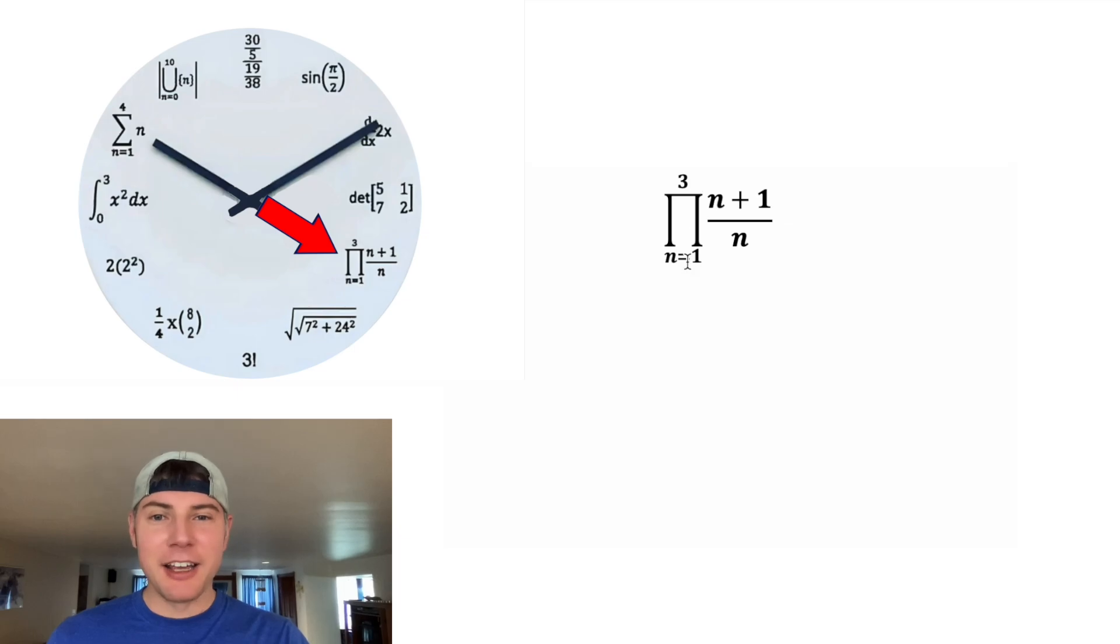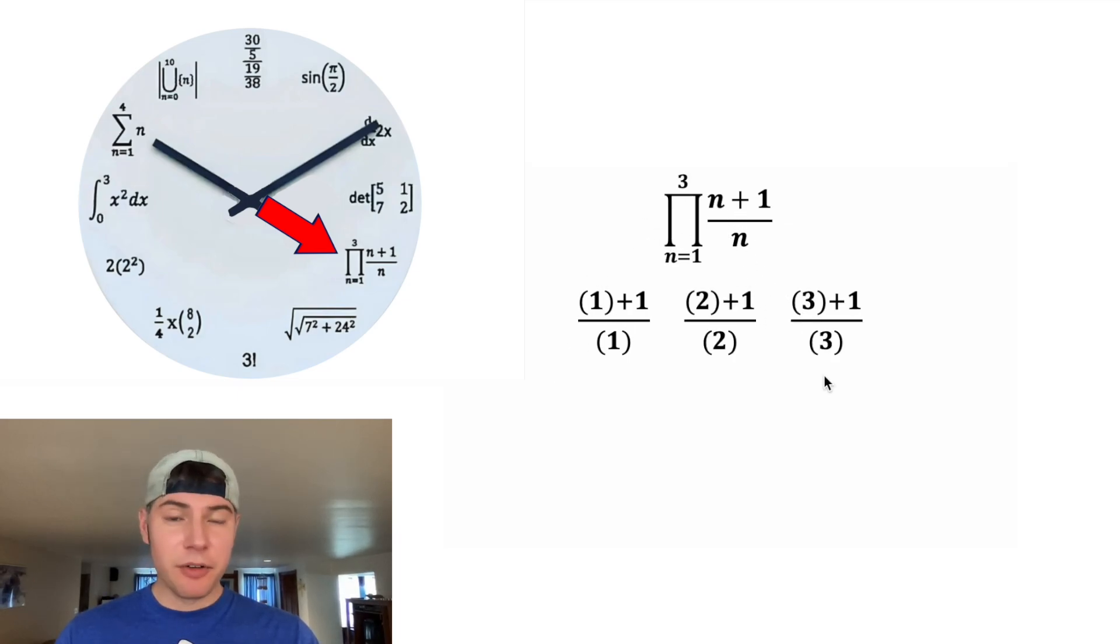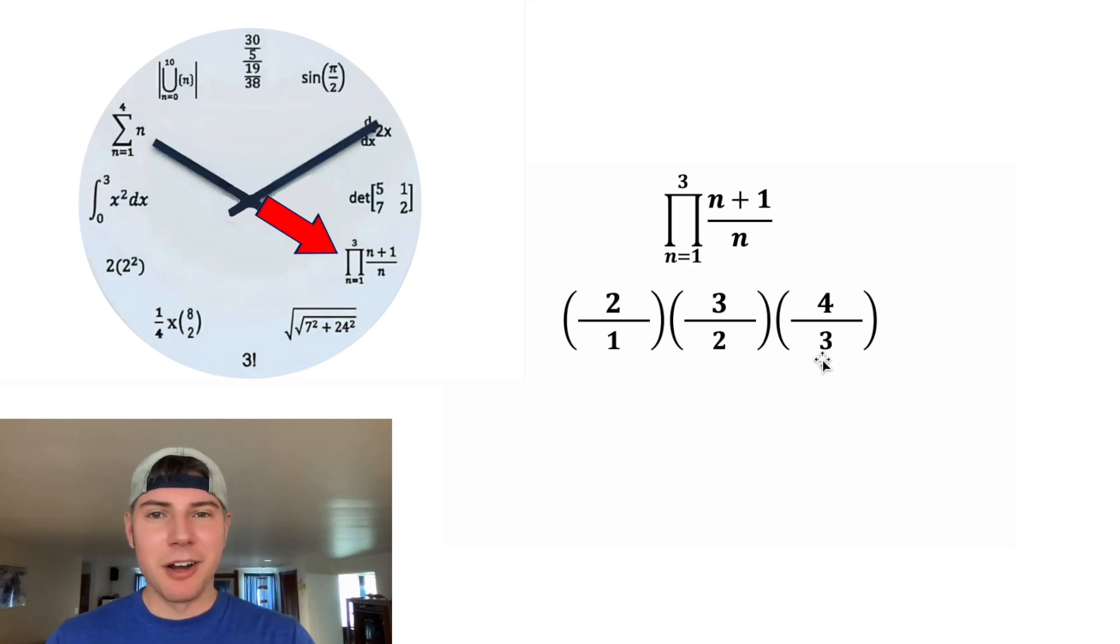Next, we have this giant pi from n = 1 to 3 of (n+1)/n. So this means we plug in 1 for the n's, then we plug in 2 for the n's, and then we plug in 3 for the n's, and we stop because we got to this 3 up here. Since this is a giant pi, that means it's going to be the product, so we're going to multiply all of these. So on top, 1+1 is 2, 2+1 is 3, 3+1 is 4. We don't need these parentheses on bottom, and then we can just multiply straight across. 2×3×4 is 24, 1×2×3 is 6, 24 divided by 6 is 4, and that's why this is at the four o'clock hour.